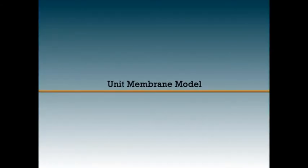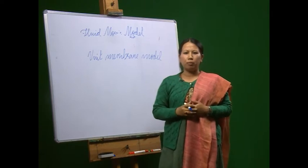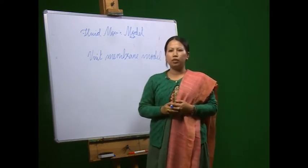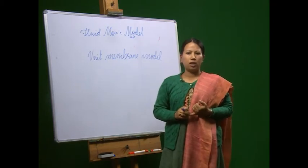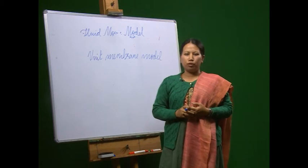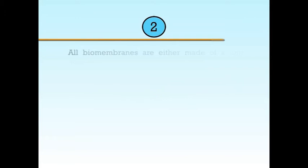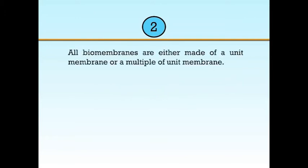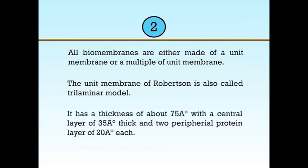Next, we'll see the unit membrane model. The hypothesis by Danielli and Davson was modified and refined particularly by J. David Robertson in 1959 into the unit membrane hypothesis. Robertson worked on the plasma membrane of red blood cells using the electron microscope and gave the concept of unit membranes, which means: number one, all membranes have similar structure of three layers with an electron-transparent phospholipid bilayer being sandwiched between two electron-dense layers of protein.